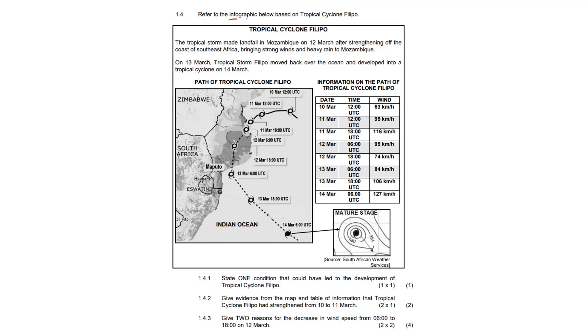So 1.4, refer to the infographic below based on Tropical Cyclone Filippo. It made landfall in Mozambique on the 12th of March after strengthening over the coast of southeast Africa, bringing very strong winds and heavy rain to Mozambique. On the 13th of March, tropical storm Filippo moved back over the ocean and developed into a tropical cyclone on the 14th of March.